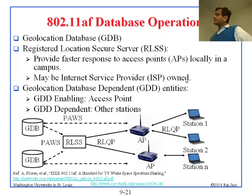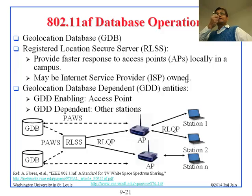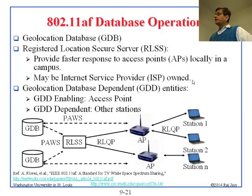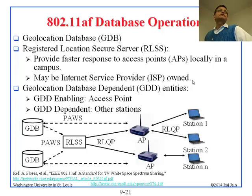PAWS is independent of 802.11af — it is general for all technologies that want to use white spaces. Whereas RLQP has been designed specifically by 802.11af and only 802.11 devices need to follow it. GDD-enabling devices are access points that can query the GDB directly. GDD-dependent devices are those that don't go to the database themselves — they just ask the access point.